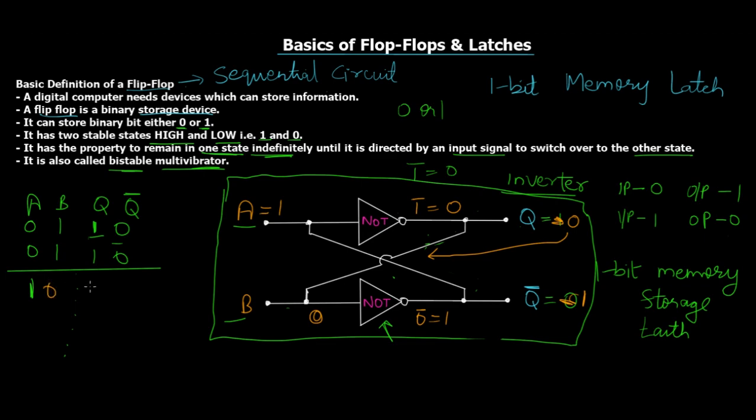So this time B is 0, Q is 0 and Q bar becomes 1. And again this cycle continues throughout indefinitely until unless we've powered the circuit. So again 1, 0, 0, 1, 1, 0, 0, 1 and this goes on till the circuit is powered or till we want the circuit to work.